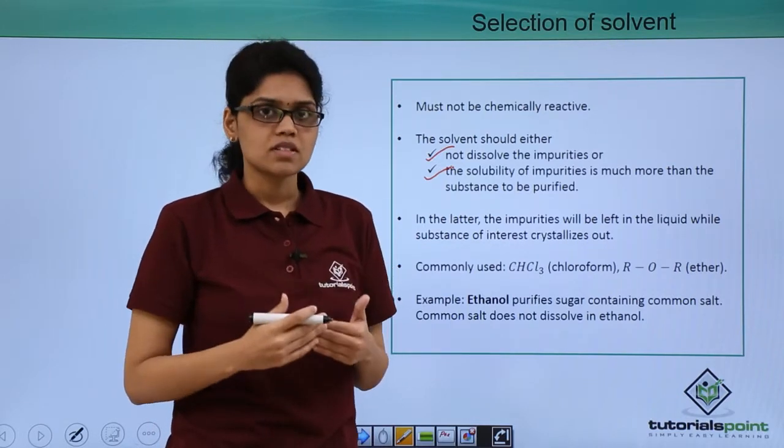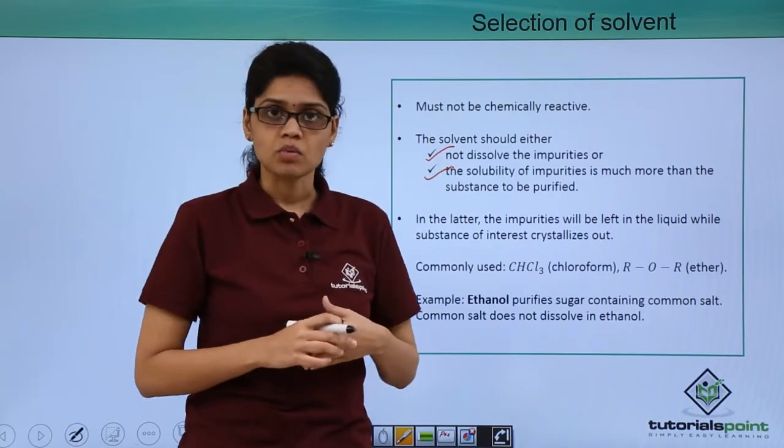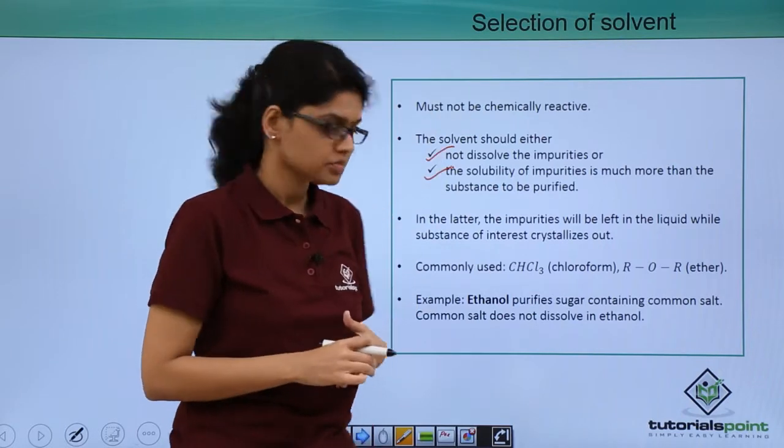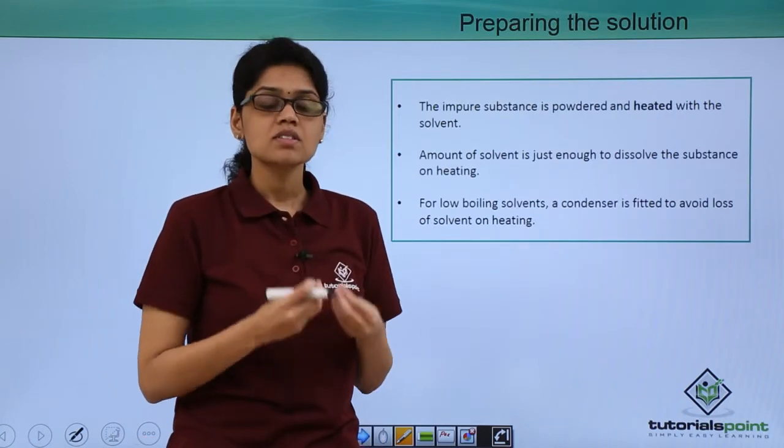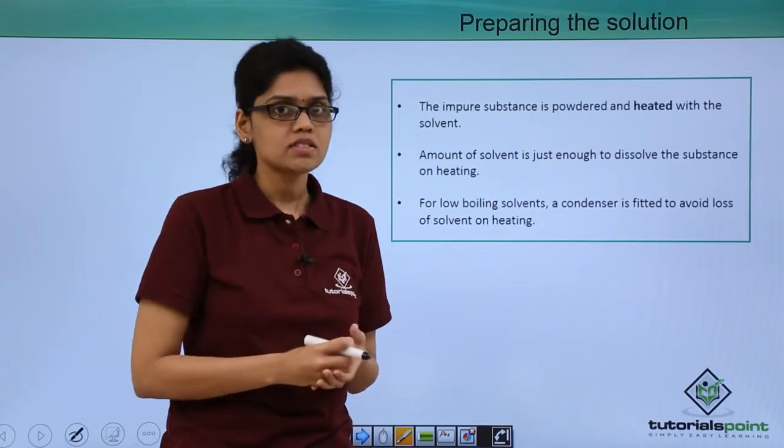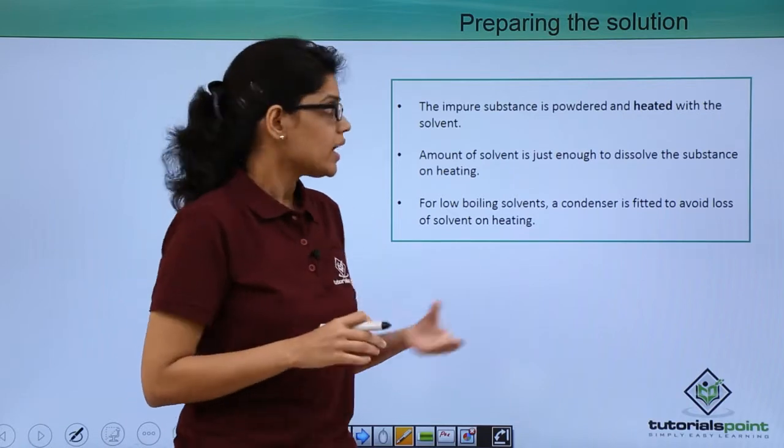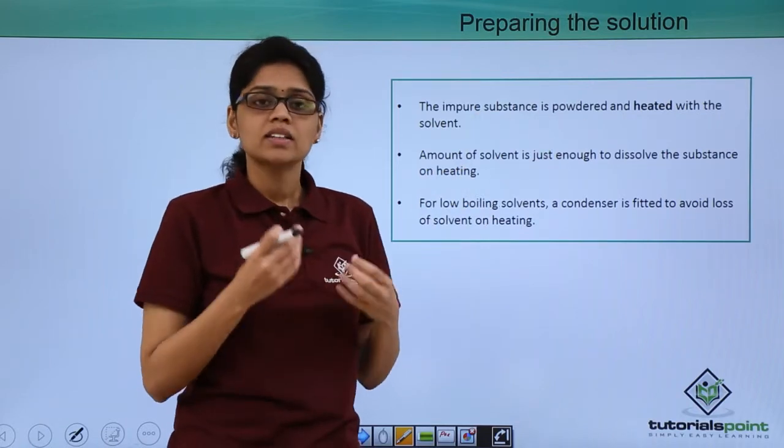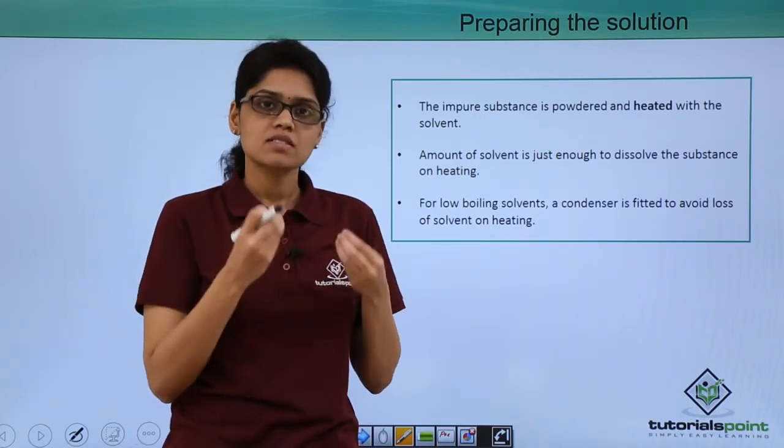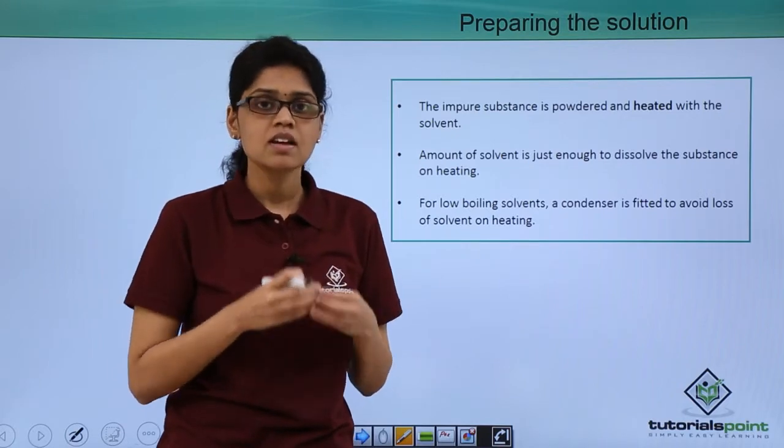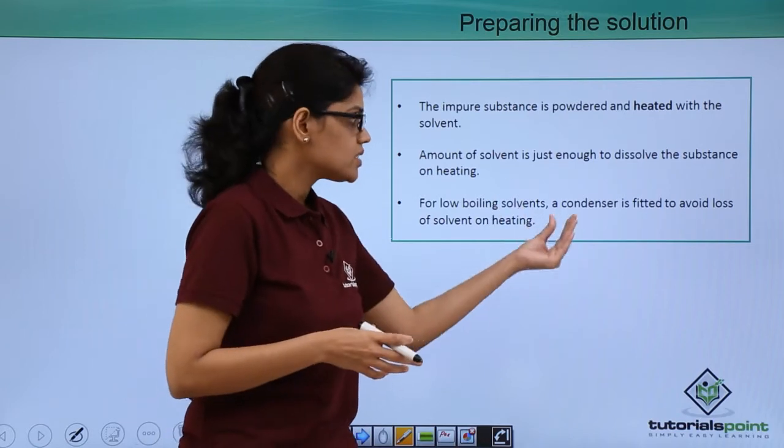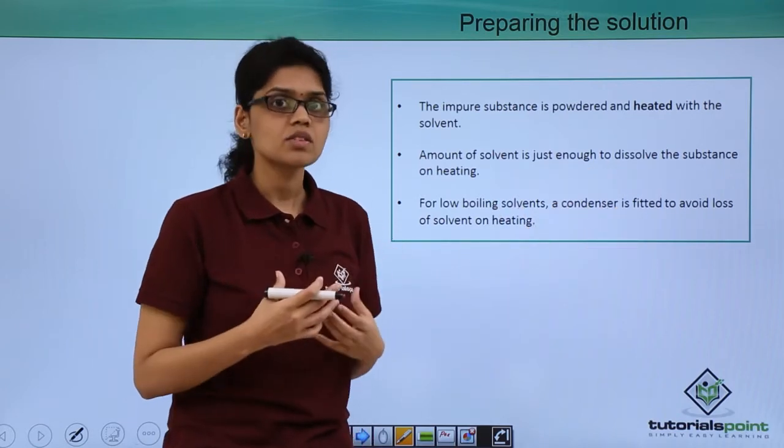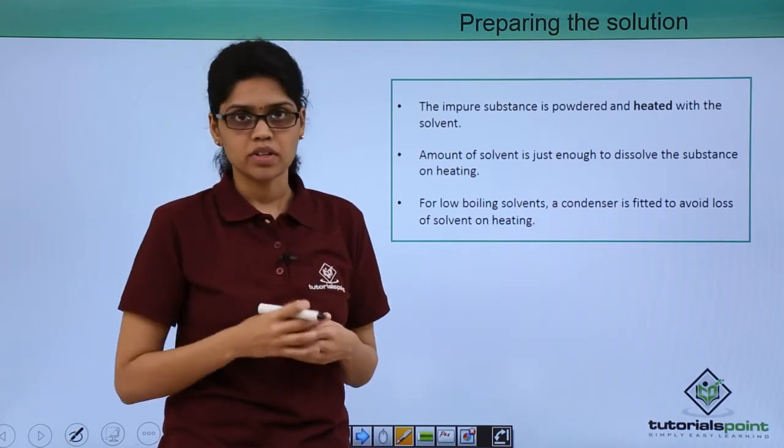The second step, after identifying the solvent, is to prepare the solution. In this step, the substance of interest along with its impurities is powdered and heated in the solvent. The amount of solvent required is just sufficient to dissolve the substance. In case we are using a low boiling solvent, a condenser is fitted to avoid the loss of solvent via evaporation.